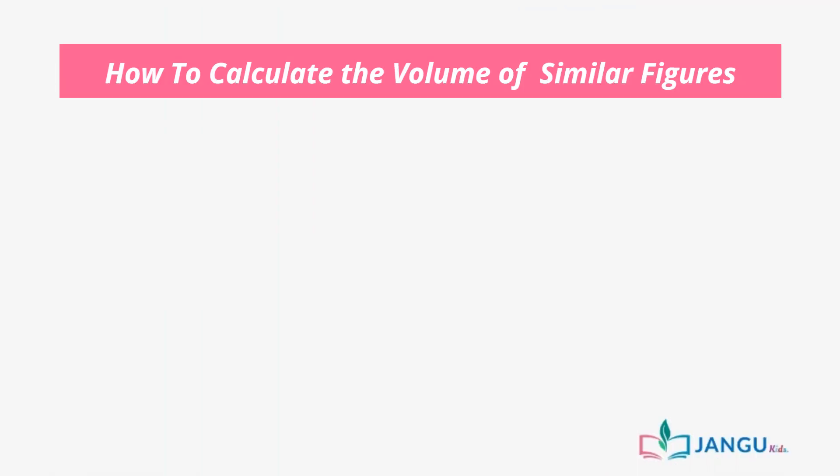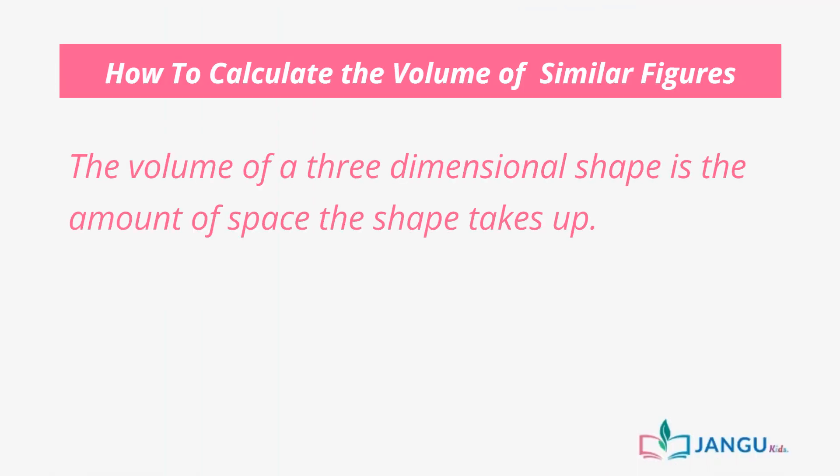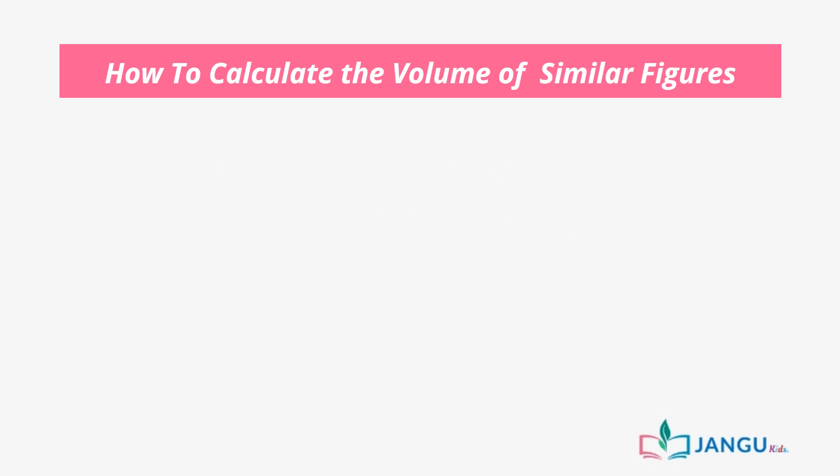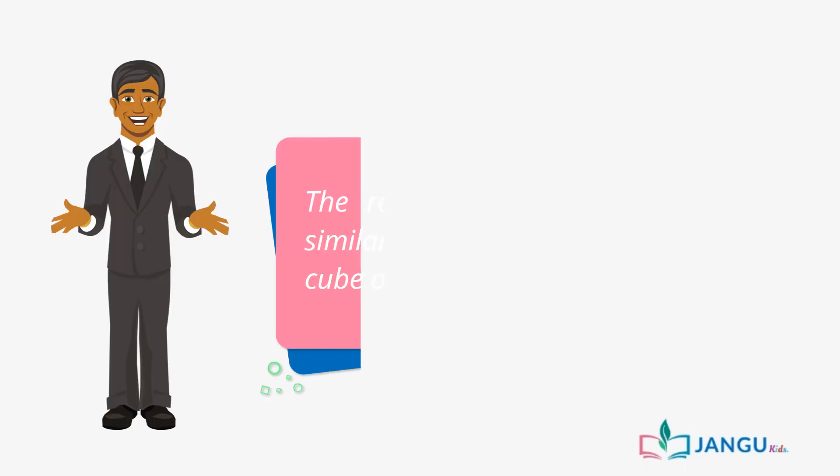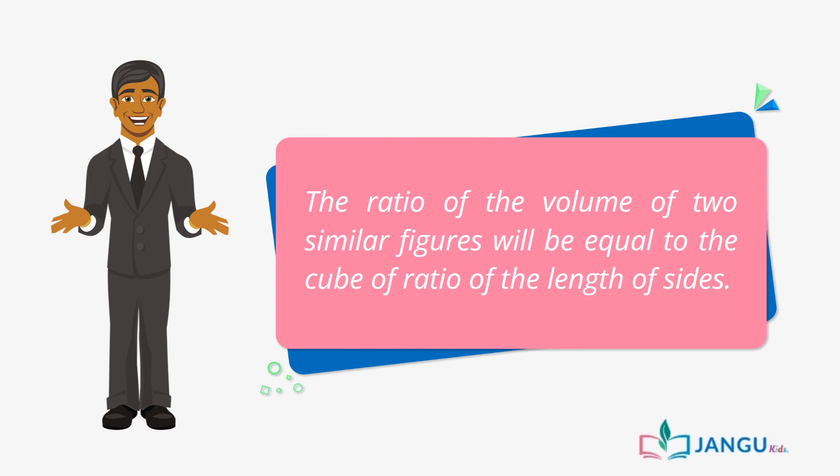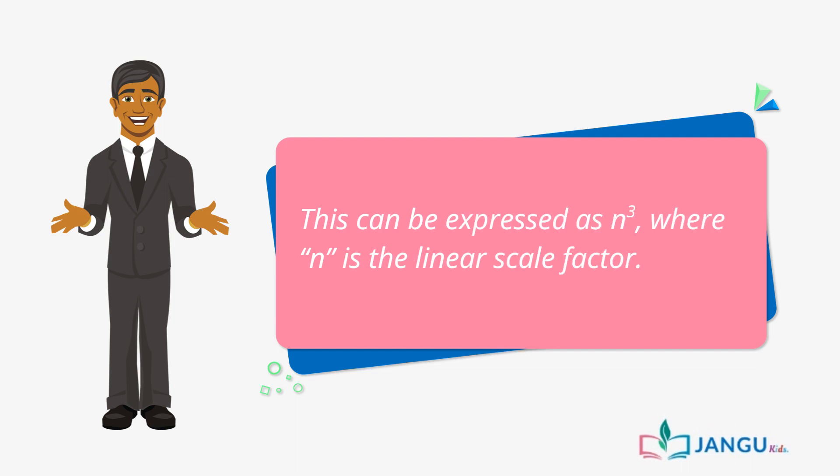Just like a flat surface, the volume of a three-dimensional shape is the amount of space the shape takes up. For example, the volume of a cylinder would be the amount of liquid it can hold inside. The ratio of the volume of two similar figures will be equal to the cube of ratio of the length of sides. Simply put, this can be expressed as n cubed, where n is the linear scale factor.